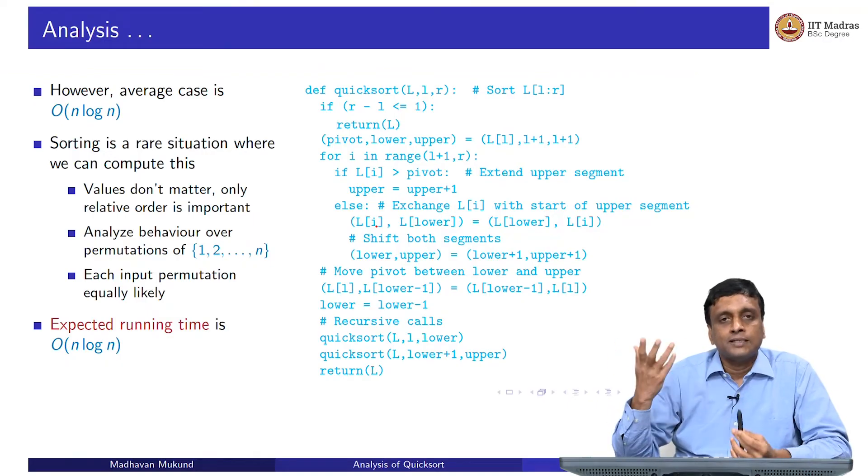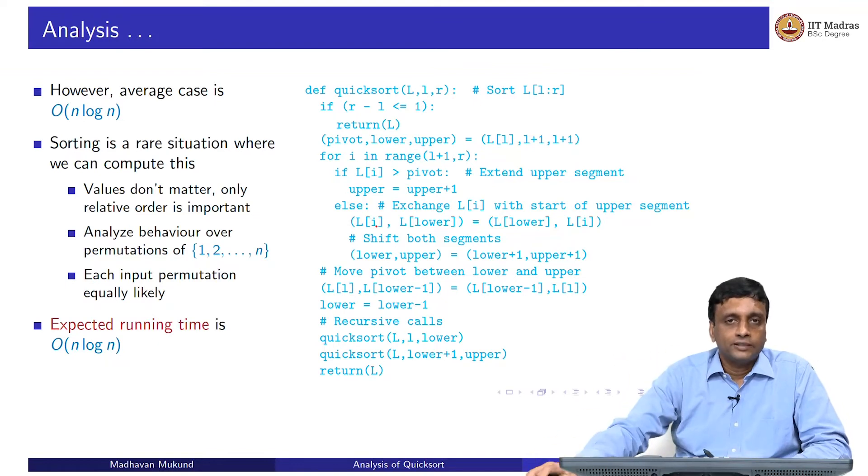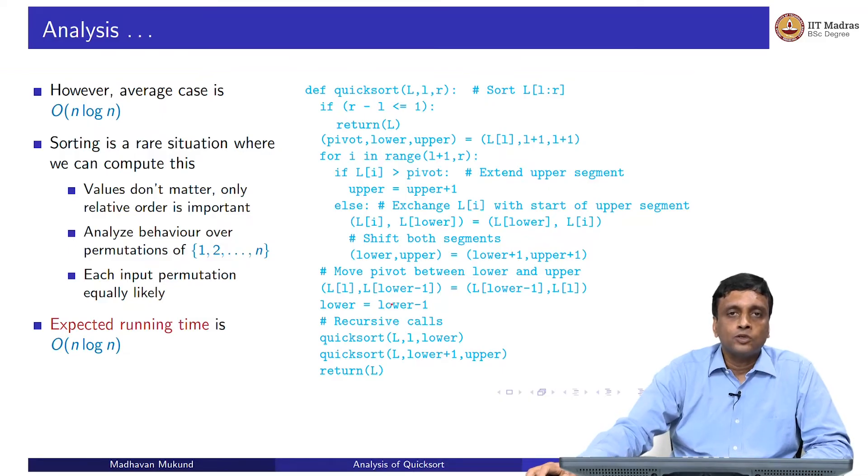Although n squared is a rare case, because n log n turns out to be the average case. This is not possible for most scenarios and algorithms, but for sorting, it is possible. In particular, it has been done for quicksort to show that its expected running time is n log n.